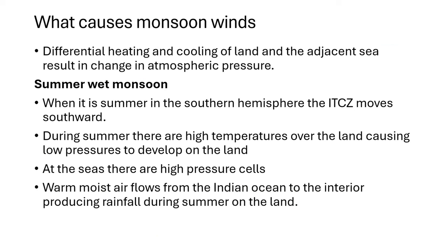We need to understand that differences in the heating and cooling of the land and the adjacent sea result in differences in atmospheric pressure. During hot days, there is a low pressure cell because there is warm rising air over the land. During cold days, there is a high pressure cell that develops. So differences in heating and cooling produce different atmospheric pressure cells.